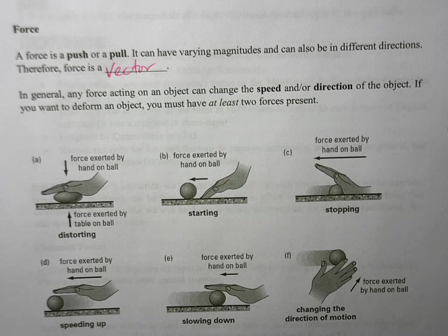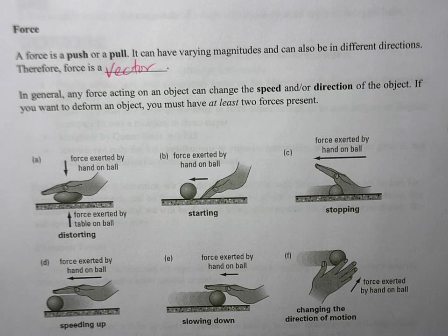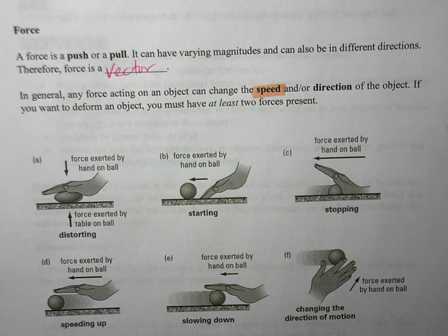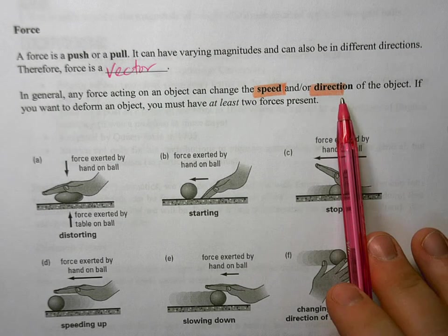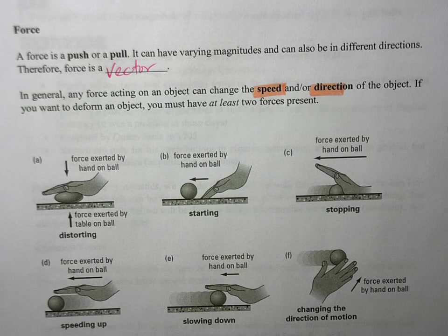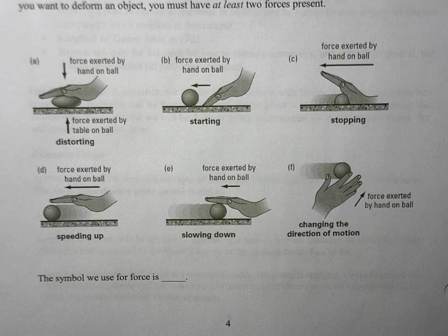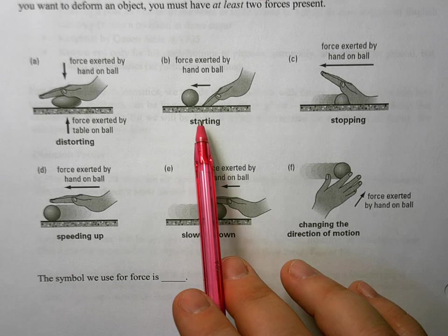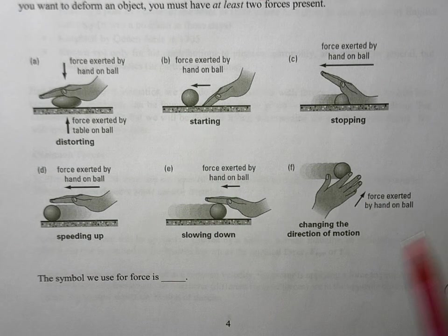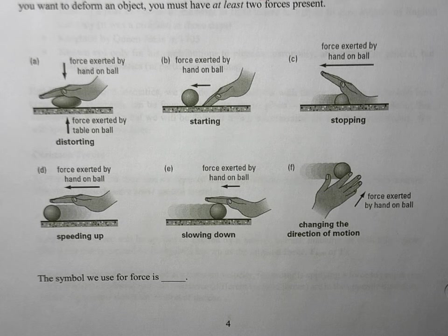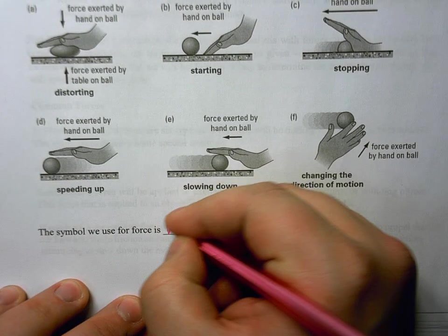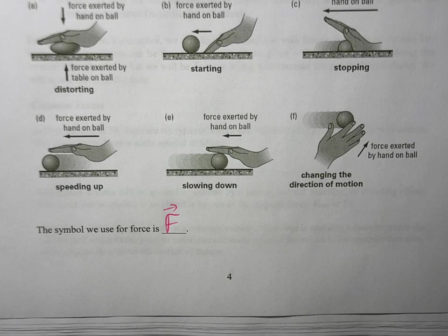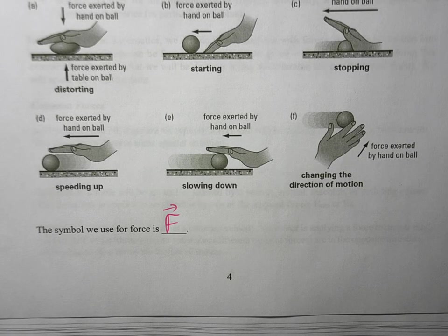The main things forces can do - we'll be looking at how the speed changes, but we can also talk about how the direction of an object changes. This will become more important when we talk about circular motion later in Physics 20. There's different things a force can do - you can distort objects, get them to start moving, stop them, speed them up, slow them down, change the direction of motion. Forces are very versatile. The symbol we'll use for force in Physics 20 is uppercase F with the vector arrow. We will talk about specific kinds of forces that will require us to change our notation slightly.